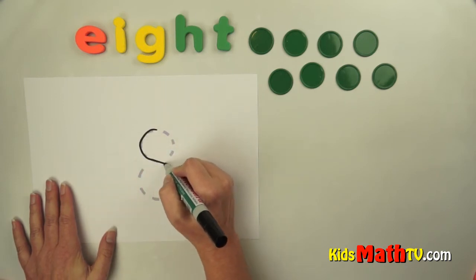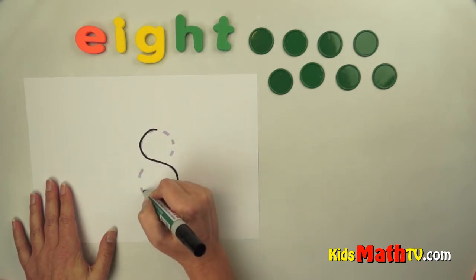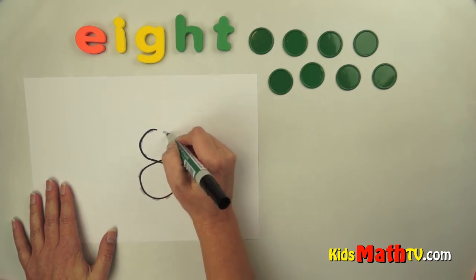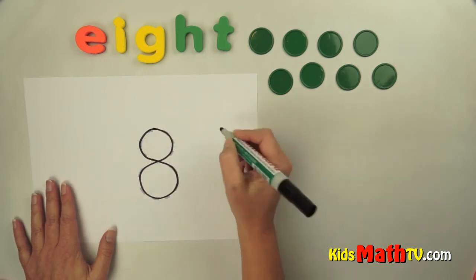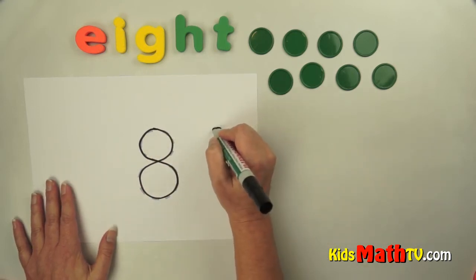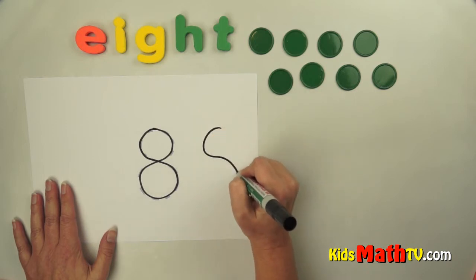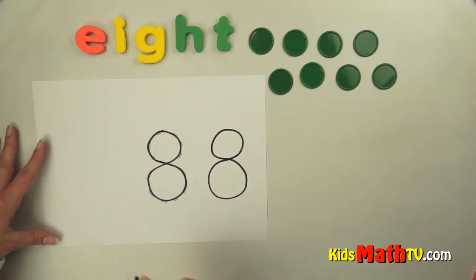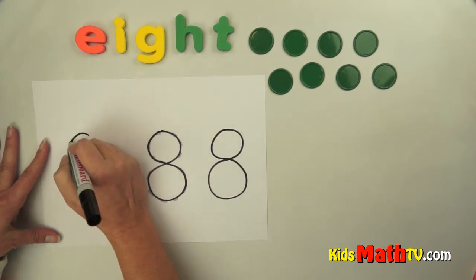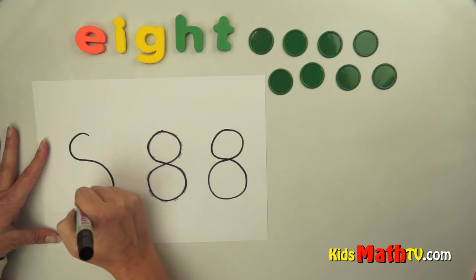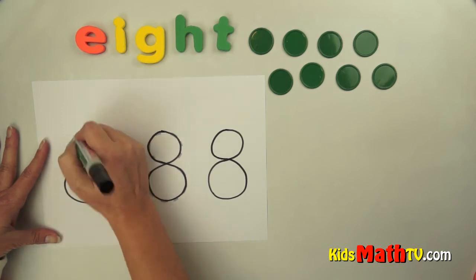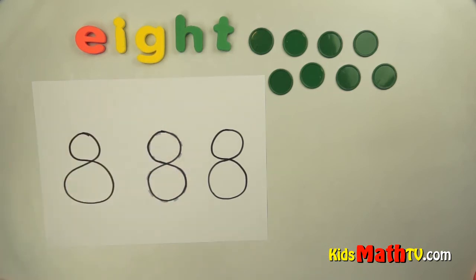Around and around the other way and back up to the top. Eight. Start at the top, go around and down the other way and around and back to the top. Eight. One more. Around and around and back to the top. Eight.